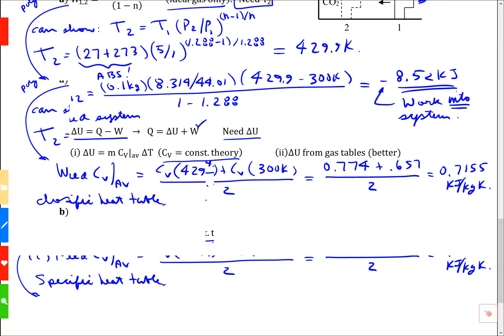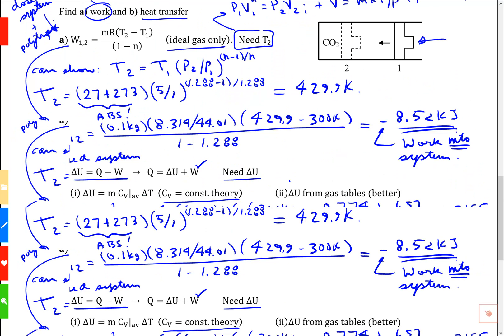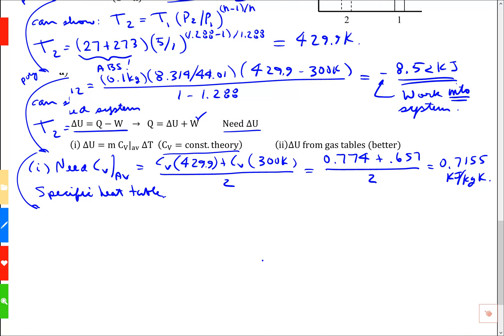Then I can find delta u from here. Delta u is going to be 0.1 kilogram times my cv average value, 0.7155 times my temperature change, which is 429.9 minus 300. When I crunch that, I get 9.294 kilojoules. That's the change in internal energy.